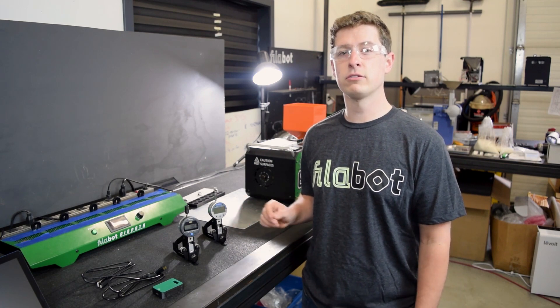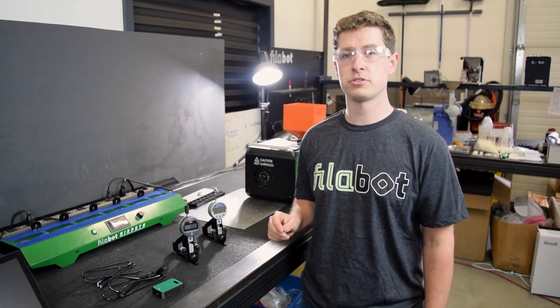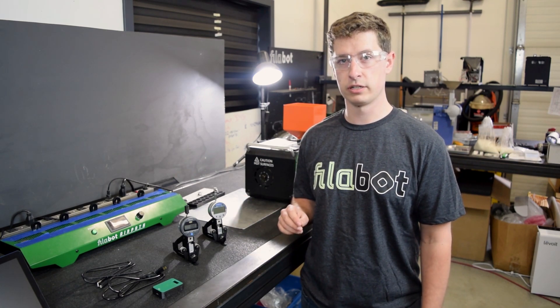The first Fill and Measure used a Fowler digital indicator, which allowed users to read filament diameter while extruding.